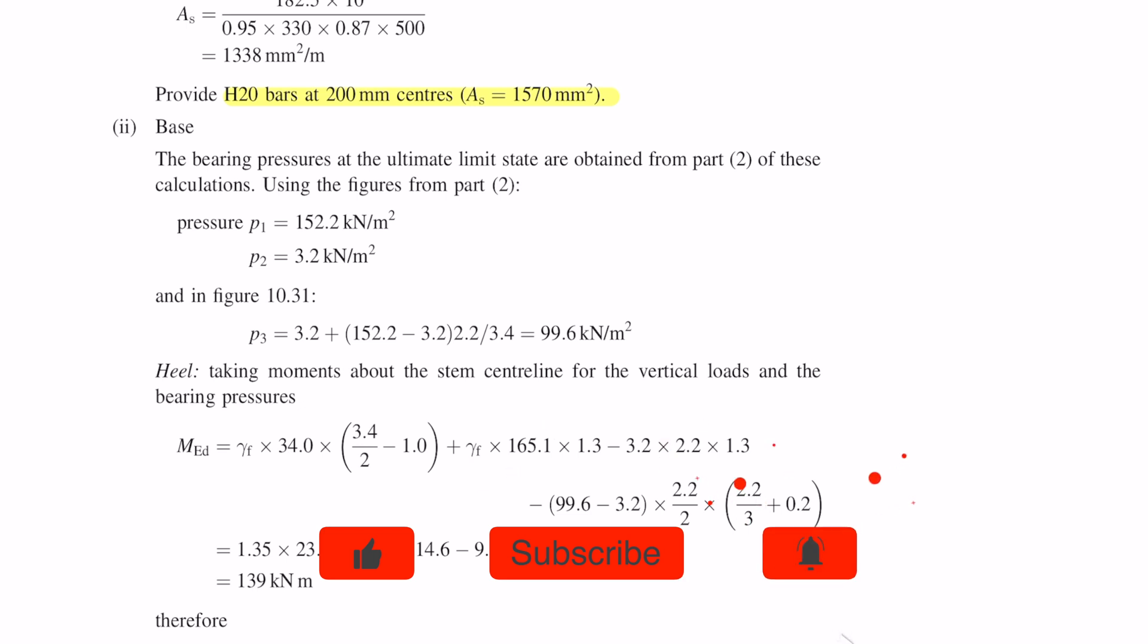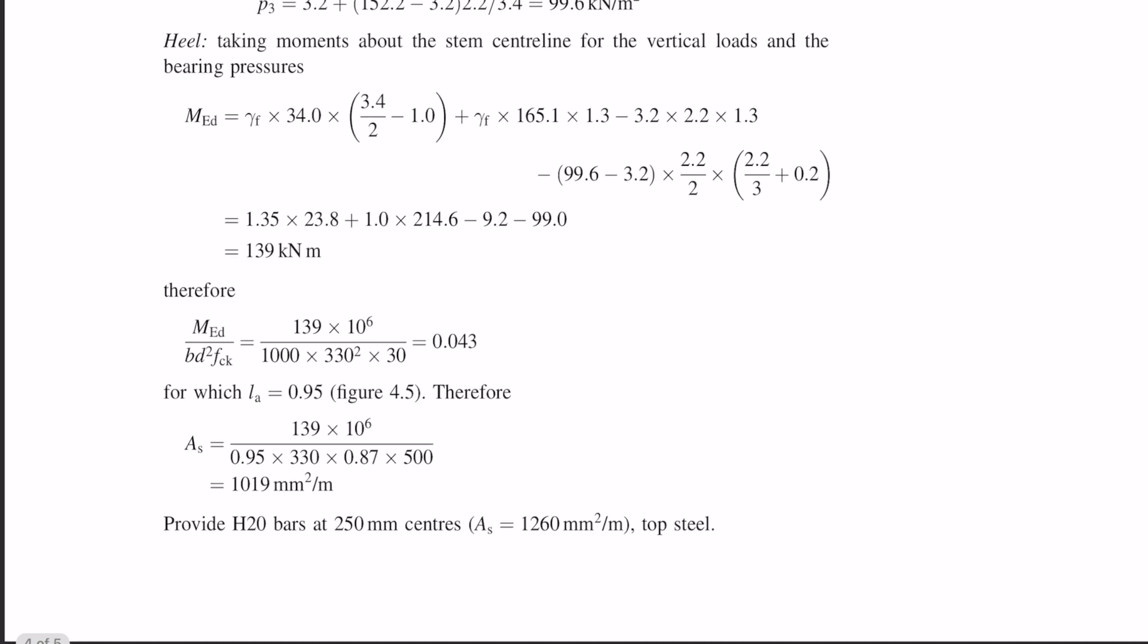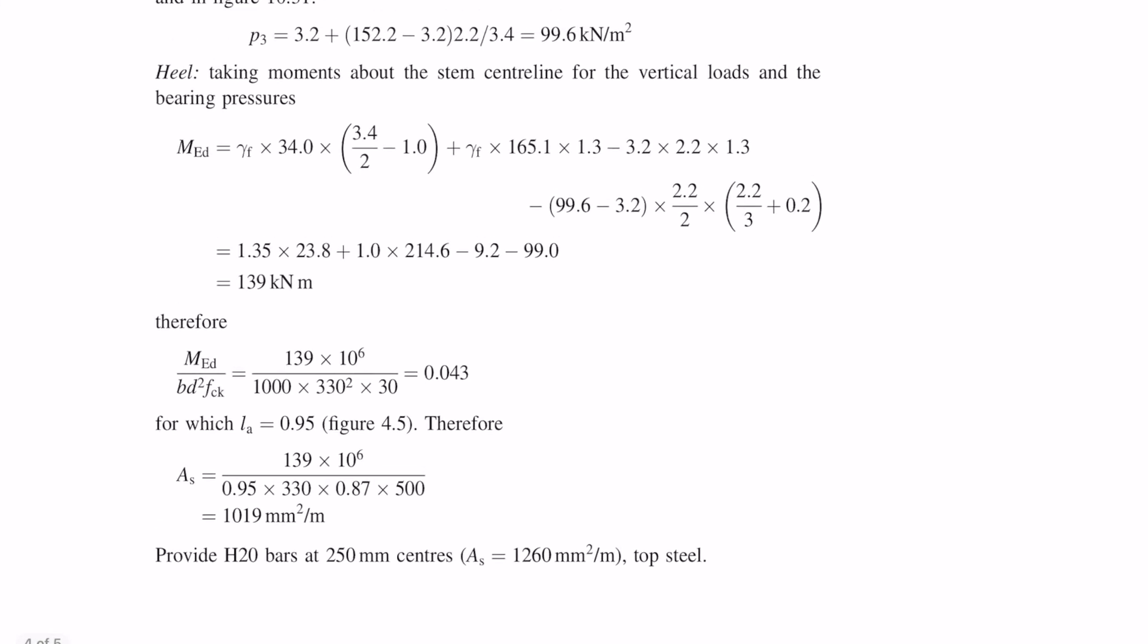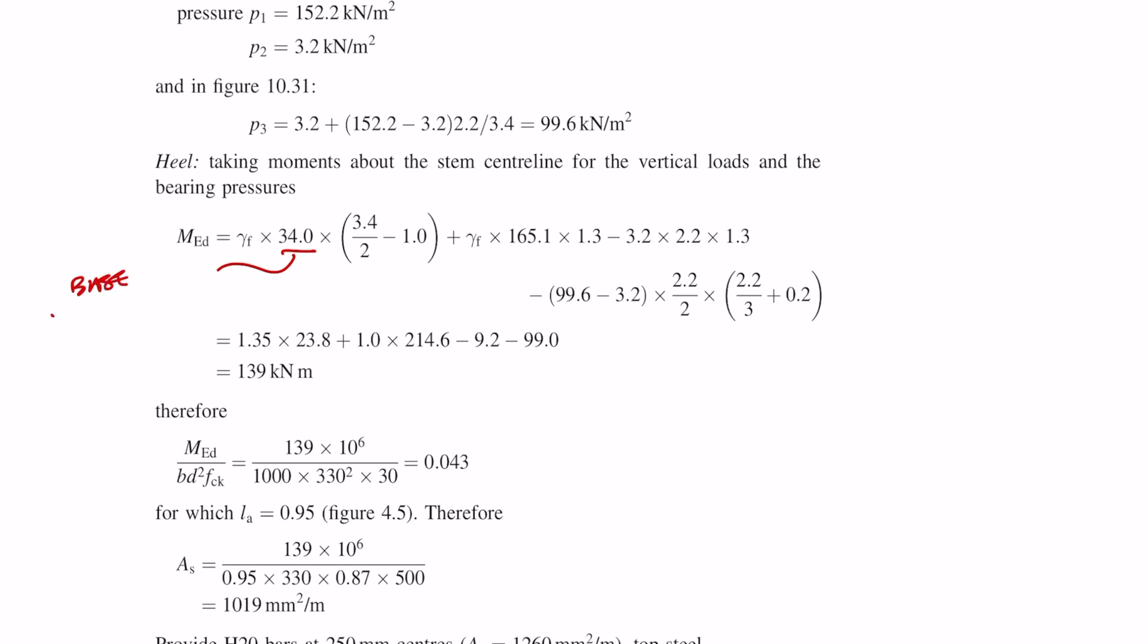Now we're moving on to calculating the base reinforcement and we want to start by looking at the reinforcement at the heel. We're going to be taking moments about the centerline of the stem. First we calculate the self-weight of the base multiplied by the lever arm, and that lever arm is the distance between the center of the base to the centerline of the stem. Then we do a similar calculation with the vertical load of the earth, and the lever arm in this instance is 1.3 meters.